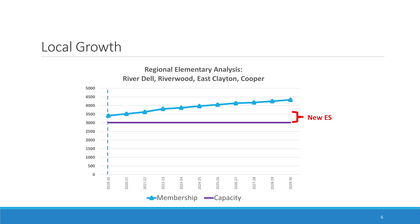The bracket to the right, labeled red new ES, indicates the capacity of the new elementary school. You can tell immediately that there is a need for those seats today, but there will also be a need for additional seats beyond the addition of the new school in the Thanksgiving area.